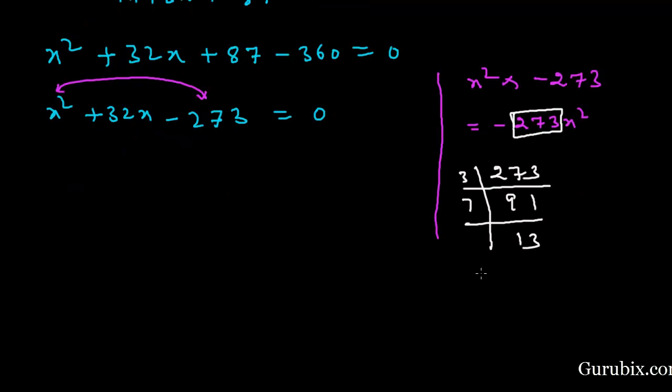So the factors will be 39 minus 7. If we add 39 minus 7, then we have 32. And if we multiply 39 with minus 7, then we have minus 273. This means we shall split this middle term: X square plus 39X minus 7X minus 273 equals 0.